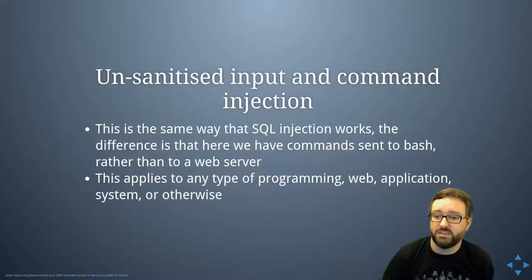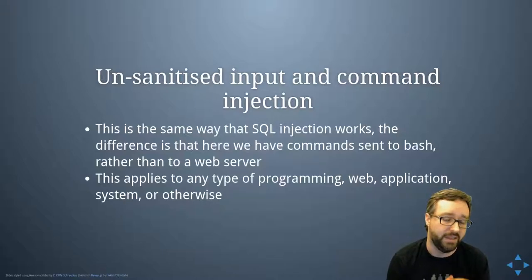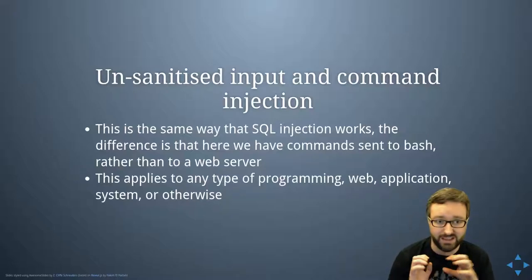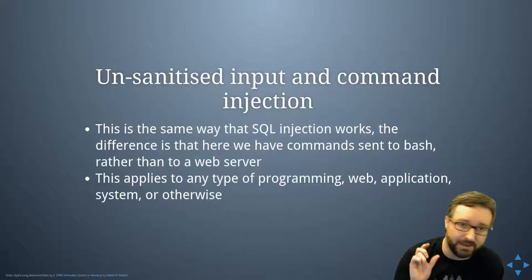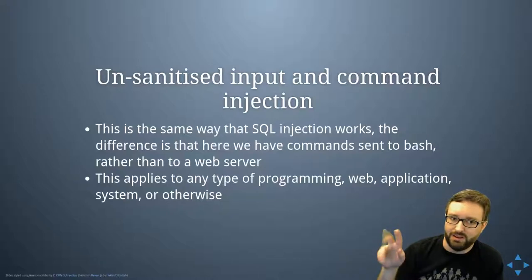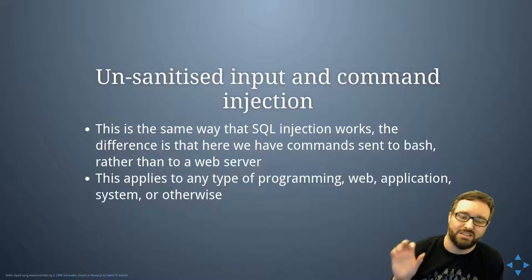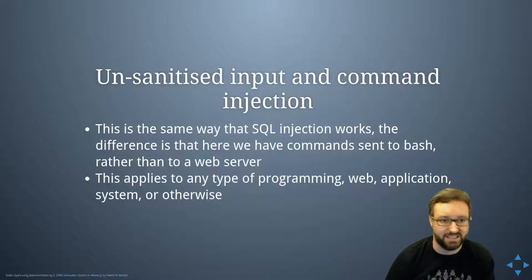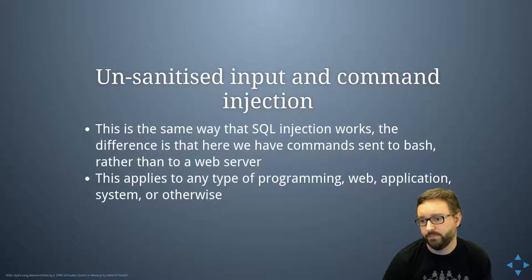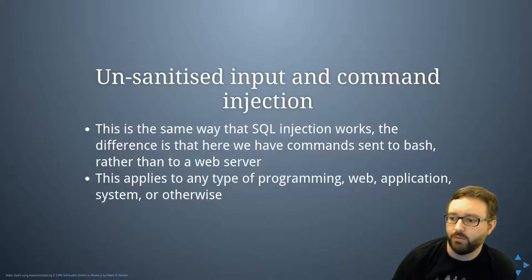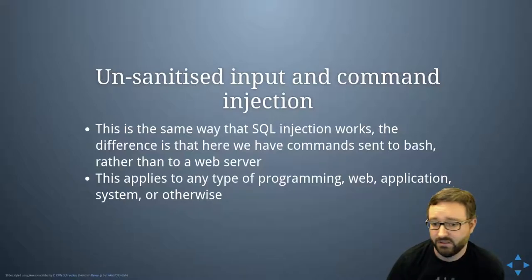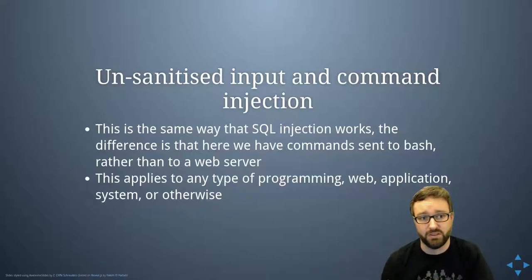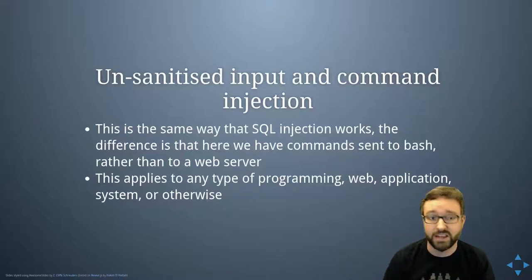It's the same way SQL injection works — here we're constructing a command sent to bash, but on a website we might ask for a username and password, then create a query checking whether someone has that name and password. If under the name field the user types their name, closes it with an inverted comma, and adds '--' to start a comment, the query suddenly becomes 'is there someone with this name?' — the answer is yes — and you don't even need to know their password. This can apply to any kind of programming, whether web development, apps, or systems — if you're combining user inputs with string manipulation to generate processed output, it could be very dangerous.